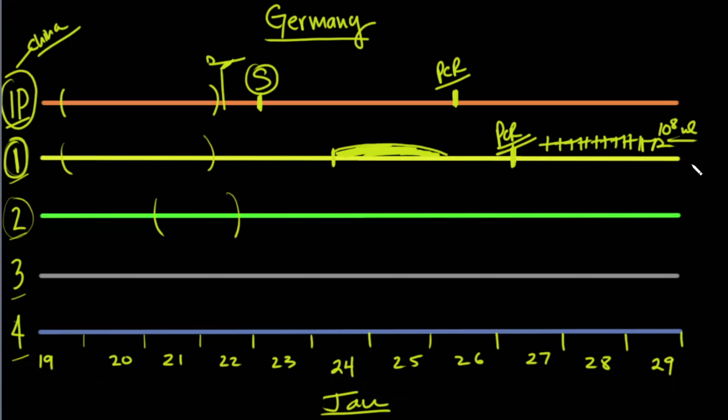Well, guess what? Patient 2, 3, and 4, they all start developing symptoms as well during the same time. Patient 2's symptoms last a little bit longer. And they test on the 28th. Of course, when he turns out positive, all hell breaks loose. And they're like, wow, what's going on here?